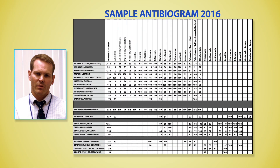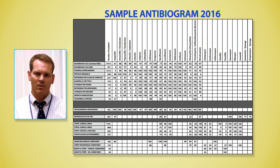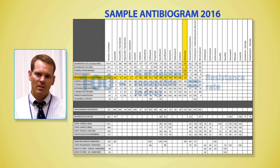Usually these incorporate a year's worth of data and antibiograms are published on an annual basis. In terms of reading an antibiogram, you'll see there's both drugs and organisms. The organisms are arranged in rows across the table and in the columns you'll see common antibiotics. To find the rate of susceptibility for a particular organism against a certain drug, you follow the row over, the column down, and where they intersect is the percent of those isolates that are susceptible to that particular drug. Conversely, you subtract that from 100 and that's the resistance rate.